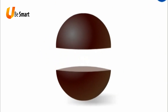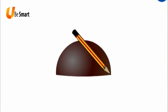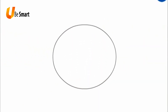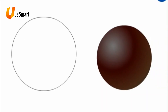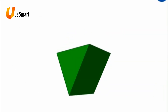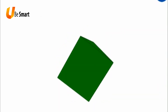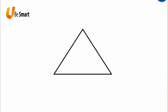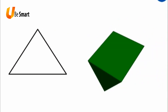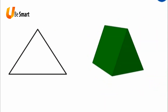Drawing a circle from a sphere. Take a sphere. Cut this sphere into equal halves. Take a pencil and run the pencil along the edge of the flat face of the half sphere. We get a circle. A circle has no sides or corners. A sphere has one curved face, no sides or corners. Drawing a triangle from a prism. Take a triangular prism. If a pencil is run along the top or bottom face of a prism, we get a triangle. A triangle has three sides and three corners. A prism has five plain faces and six corners.